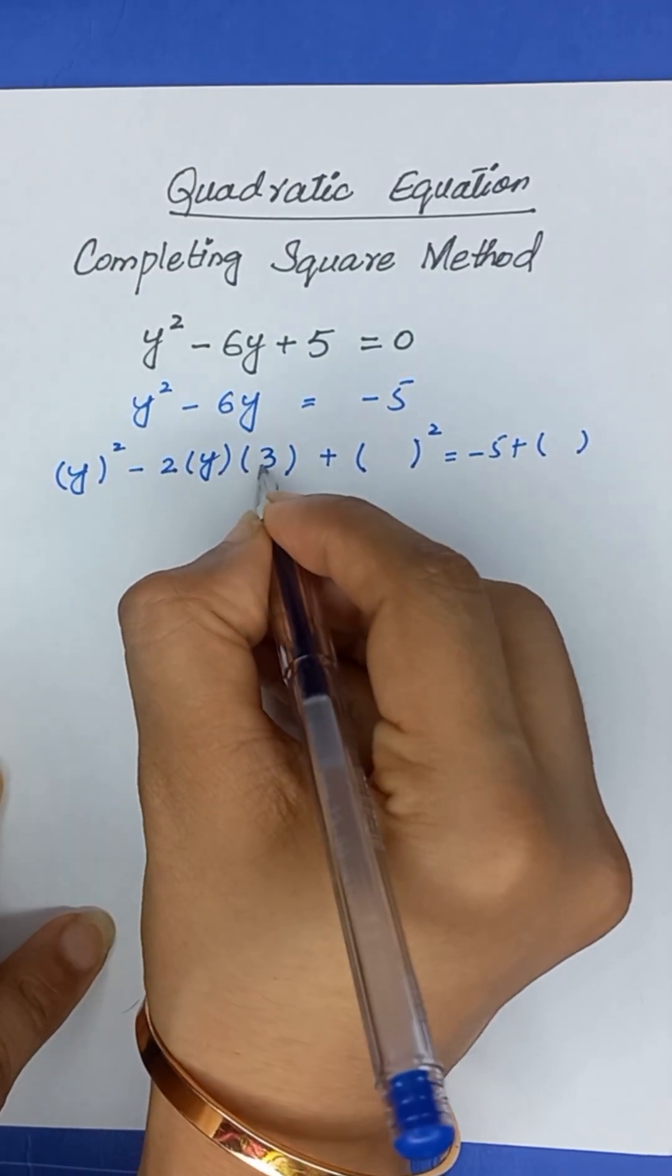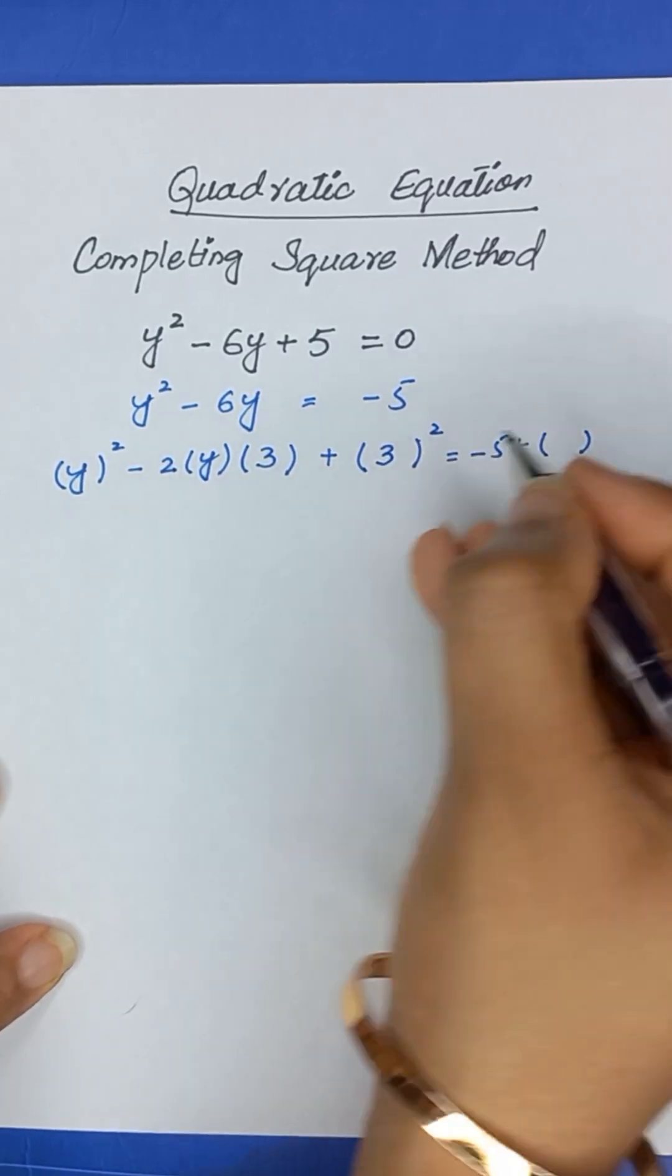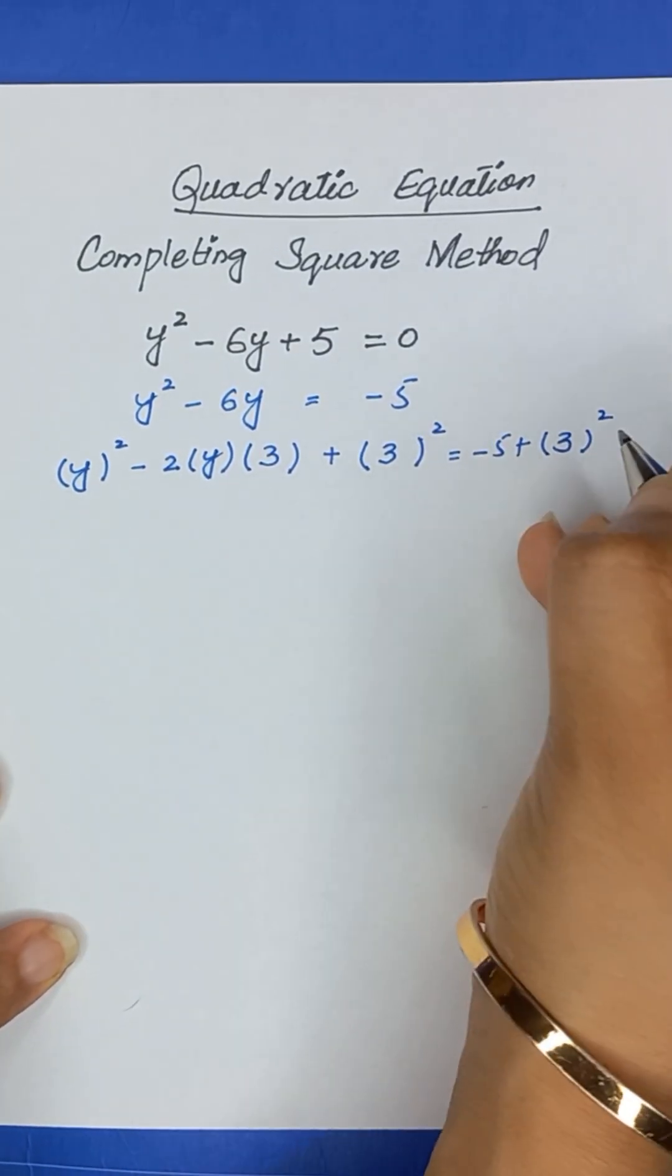2, 3 times 6. So, it means b will be 3 and here b squared means 3 squared and here also we will add 3 squared.